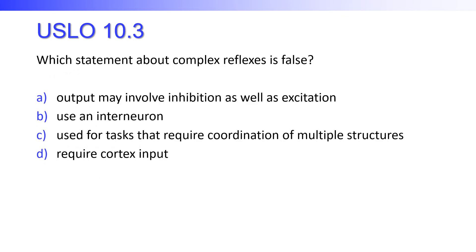Which statement about complex reflexes is false? Output may involve inhibition as well as excitation. Use an interneuron. Used for tasks that require coordination of multiple structures. Require cortex input? The answer is: require cortex input. A complex reflex can inhibit one structure while causing another to act, it often uses an interneuron in the spine, and is used for tasks requiring coordination of multiple structures — but it doesn't require any cortical input. That is not the nature of a reflex.